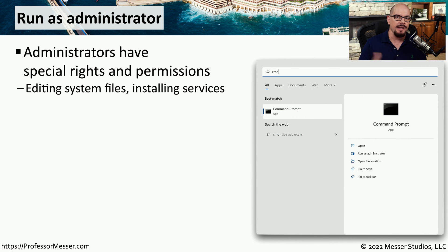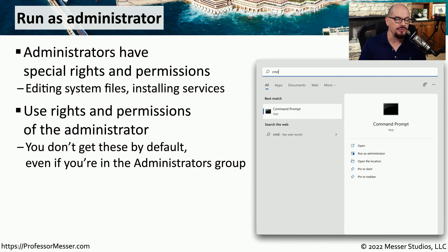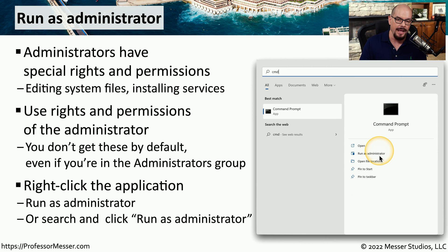By default in Windows, not every user has access to every part of the operating system. When you're using Windows as a normal user, there are certain things that are restricted. To be able to edit system files, install services, and provide enhanced functions, you would need to have an elevated account or administrator rights. This is even true if you've been assigned administrator rights on that particular device — those rights don't go into effect until you explicitly tell Windows that you would like to do something as the administrator. So if you are starting an application and you would like to run it with elevated rights and permissions, you would right-click on the application and choose Run as Administrator.